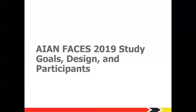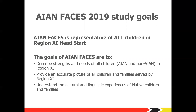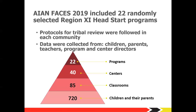AI-AN FACES is designed to be representative of all children served by Region 11, both American Indian and Alaska Native children, as well as those who are not American Indian or Alaska Native, even though non-AI/AN children are a small percentage. AI-AN FACES 2019 has several goals: to describe the strengths and needs of all children in Region 11, to provide an accurate picture of all children and families served by Region 11, and to understand the cultural and linguistic experiences of Native children and families. To achieve a nationally representative sample, 22 randomly selected programs were recruited. We collected data from children, parents, teachers, center directors, and program directors.